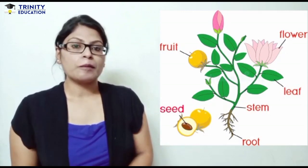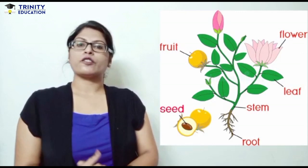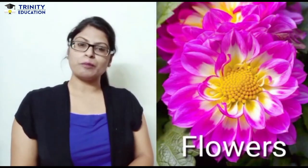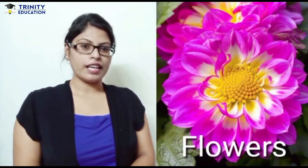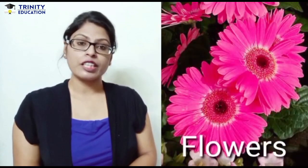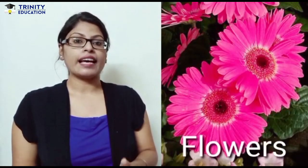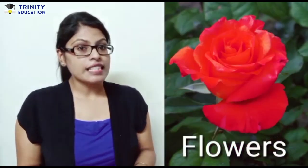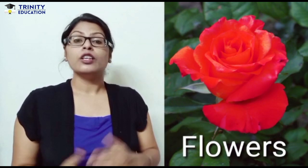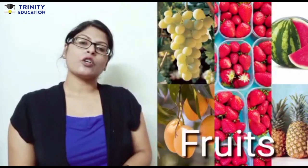The first part of the plant is flowers. It is the most beautiful part of the plant. They have different shapes, sizes, and colors. For example, rose — it is in red color. Lotus — lotus is in pink color.